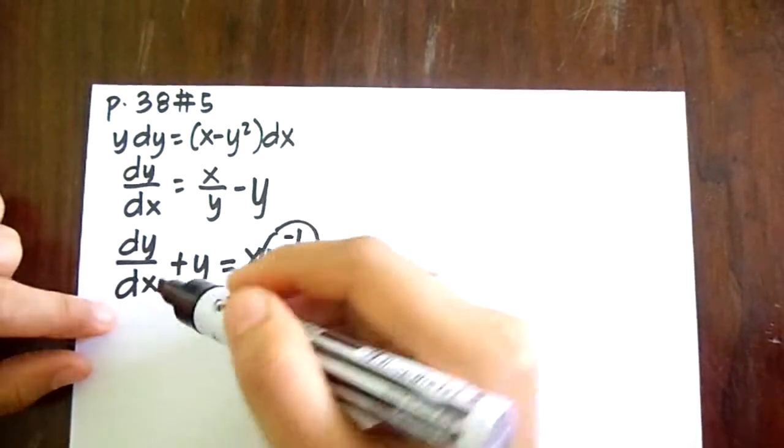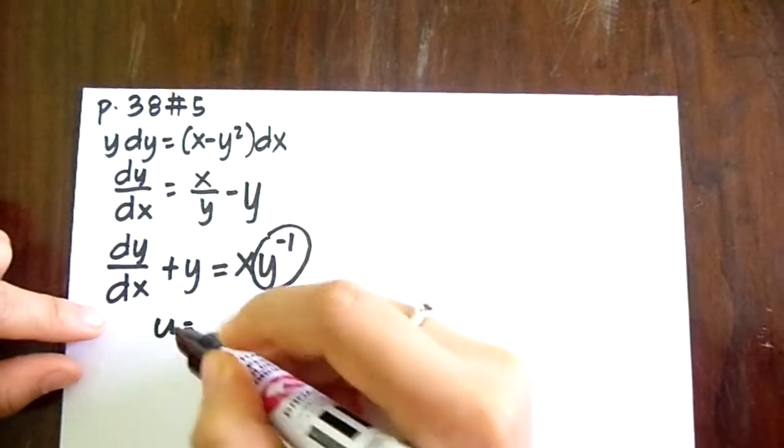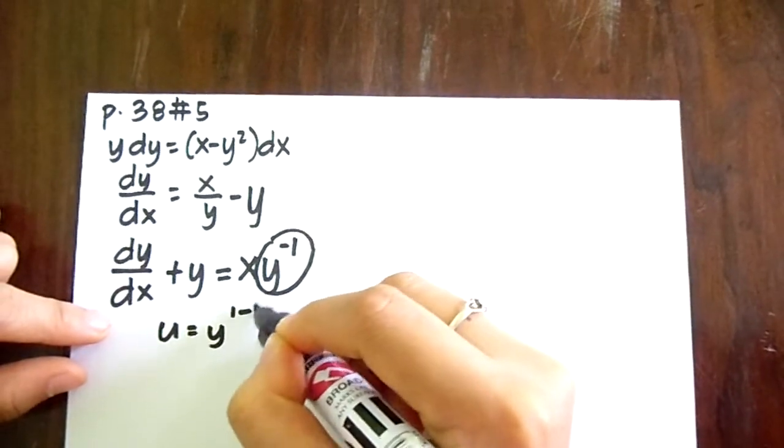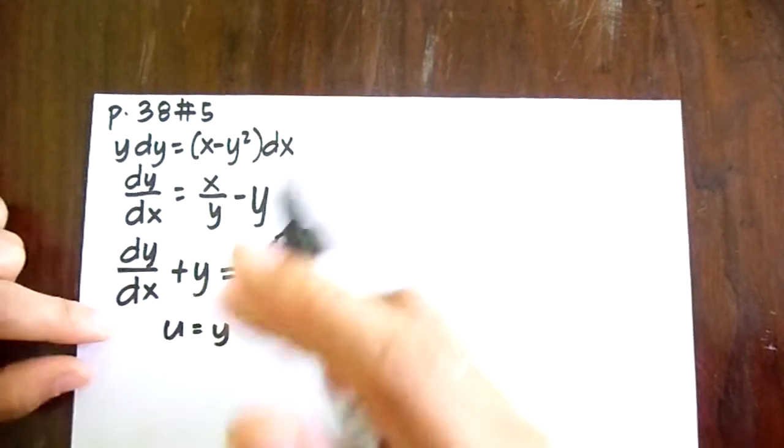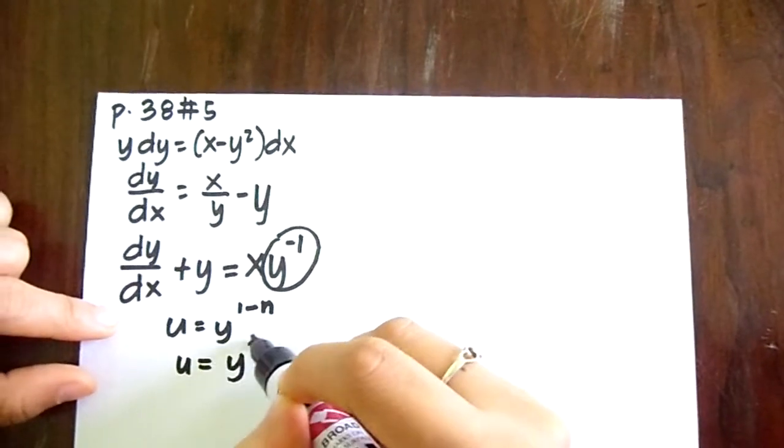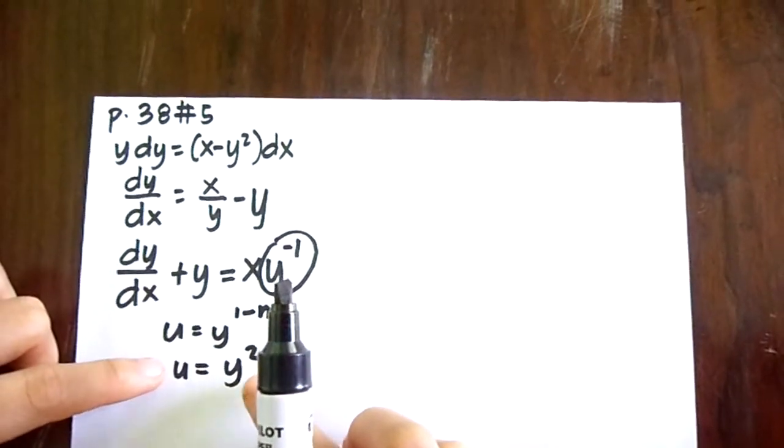So to eliminate this, we have our formula u equals y to the 1 minus n, wherein our n is equal to negative 1, thus our u here becomes y squared.